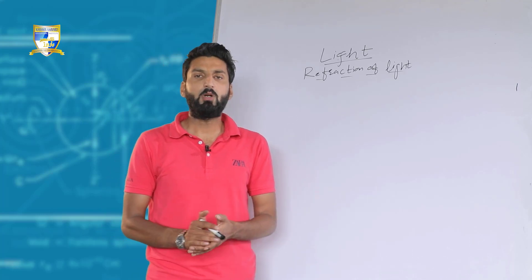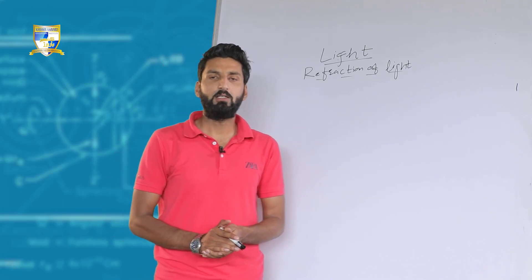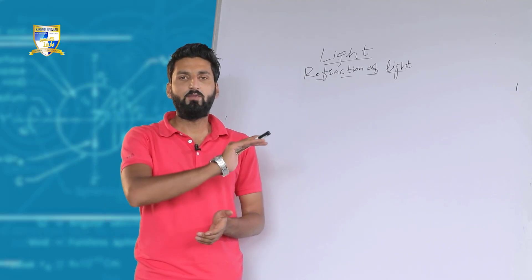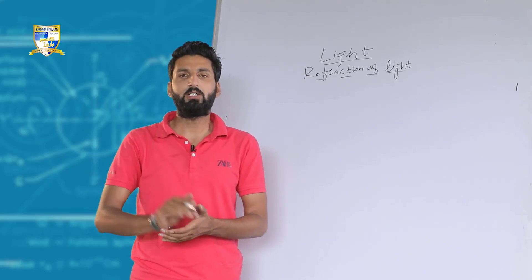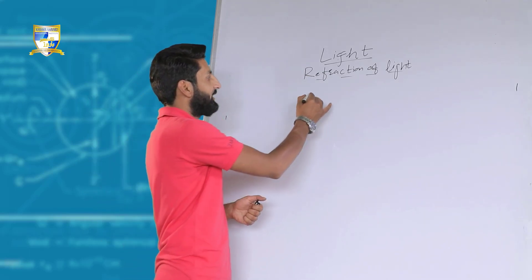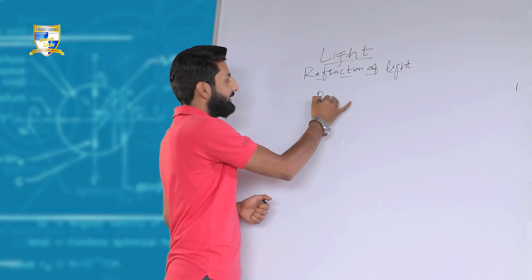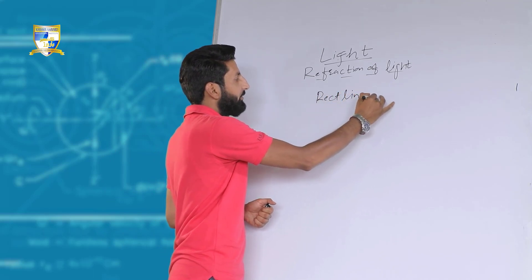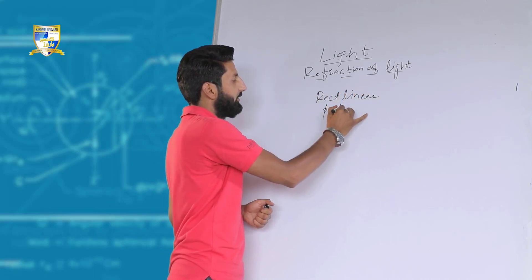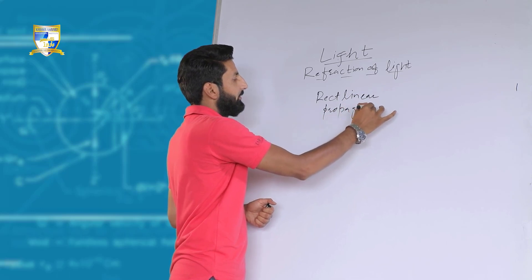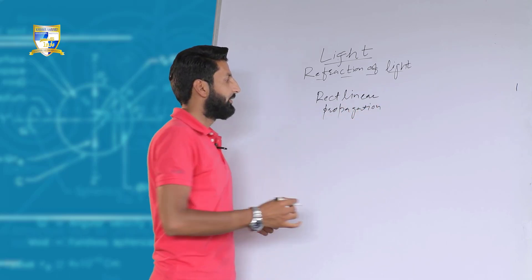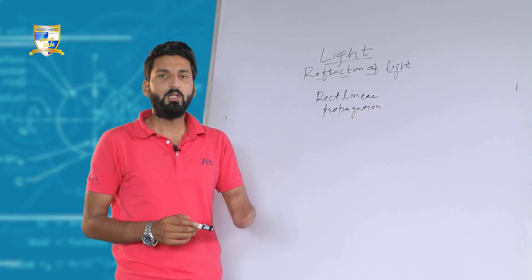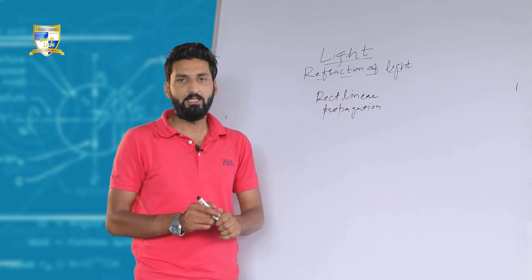One of the basic properties of light is that light travels in straight lines. The path of light is straight, and that property is called rectilinear propagation of light.